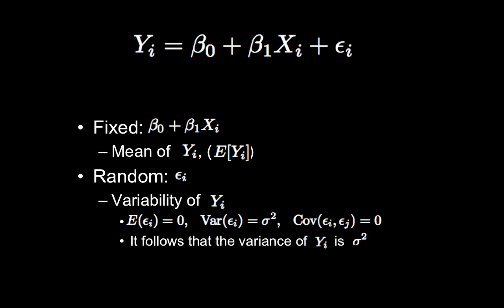So this information about the vector epsilon i, or about epsilon i, transfers then to Yi, and it follows that the variance of Yi is also sigma squared. So again we have three parameters, beta naught and beta 1 and sigma squared.